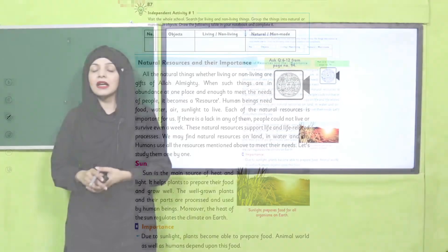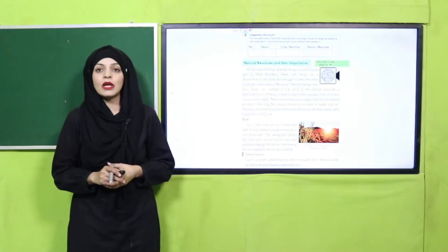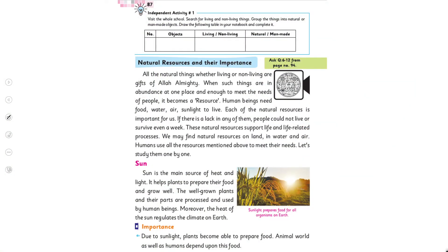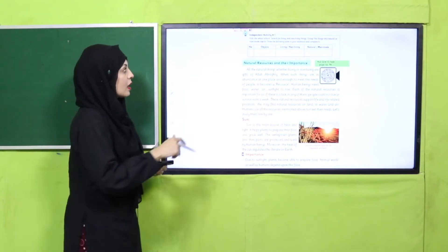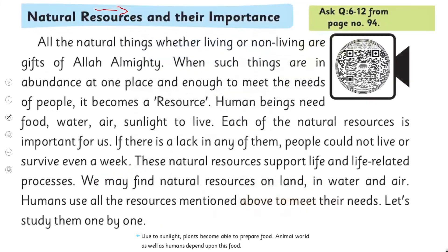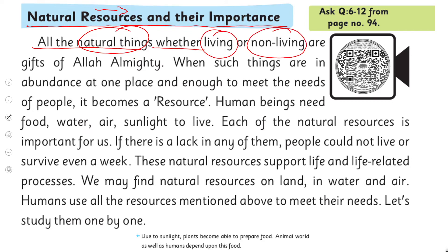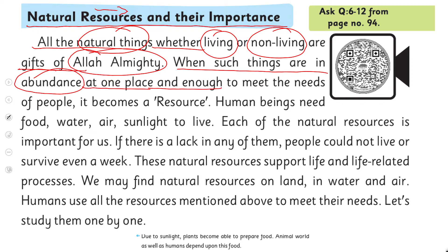Now moving to the main reading lesson on page number 87 — quickly open it. The lesson is 'Natural Resources and Their Importance.' Put your fingers where I will read. 'All the natural things, whether living or non-living, are gifts of Allah Almighty. When such things are in abundance at one place and enough to meet the needs of people, it becomes a resource.' So all living and non-living things are Allah's gifts, and when natural things exist in great quantity at one place they become a resource.